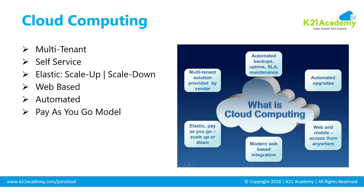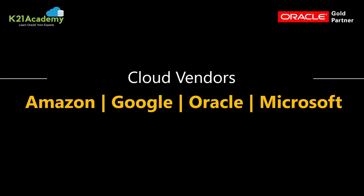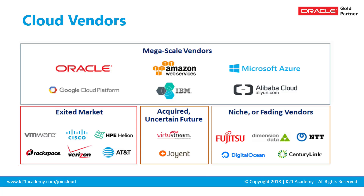Cloud works on a pay-as-you-go model, meaning you pay for what you use. If you're not using services, you can shut down environments and not pay for them. There's also web-based integration across multiple customers including on-premise. Contrary to common belief, cloud is much more secure — especially when working with tier-one vendors like Amazon, Google, Oracle, Microsoft, IBM, and Alibaba.